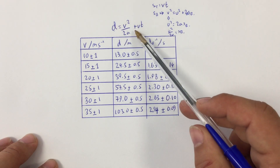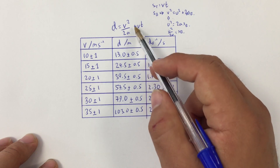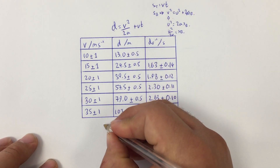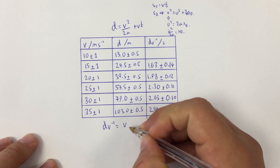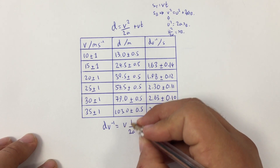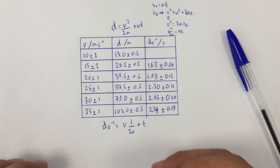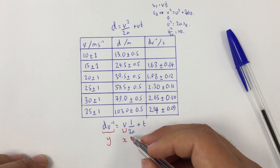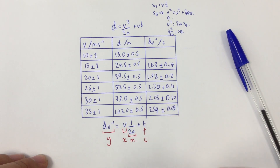We want to plot a graph in the format of y equals mx plus c. Because we've got v in two places and we have a squared quantity, we divide everything by v to get a straight line. So d·v⁻¹ equals v times (1 over 2a) plus t. This equation now fits the straight line form.